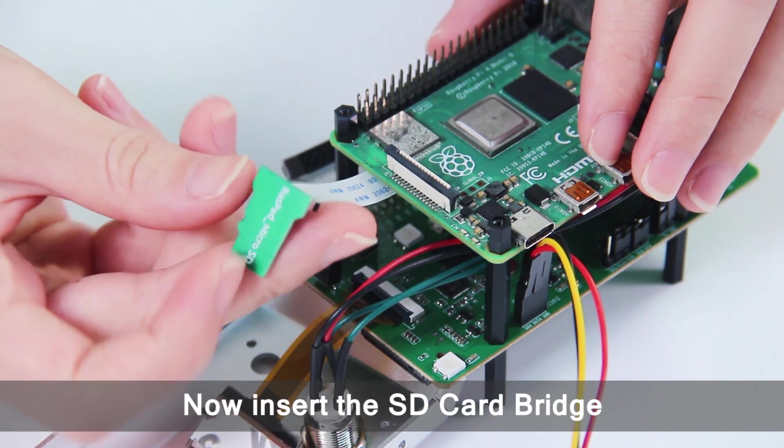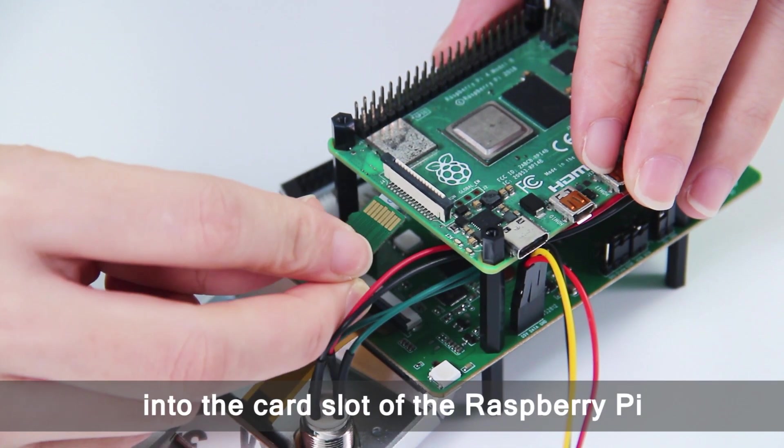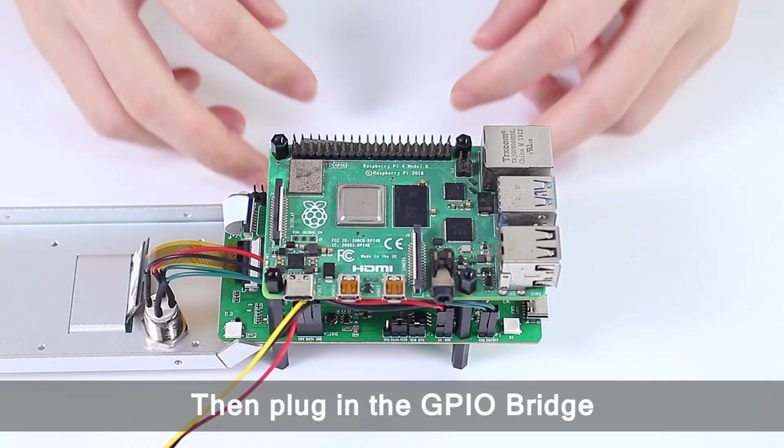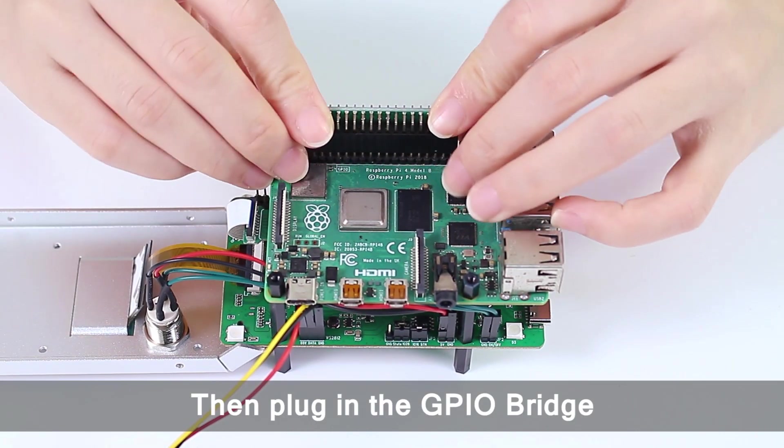Now insert the SD card bridge into the card slot of the Raspberry Pi. Then, plug in the GPIO bridge.